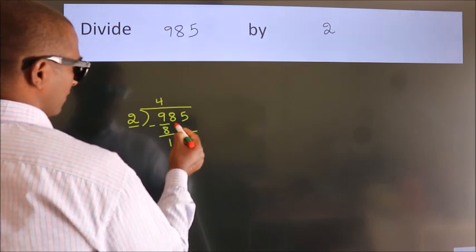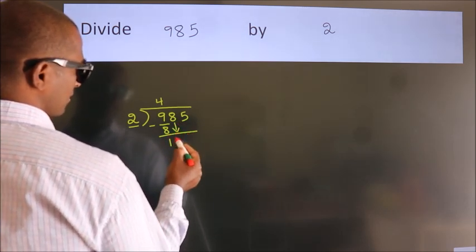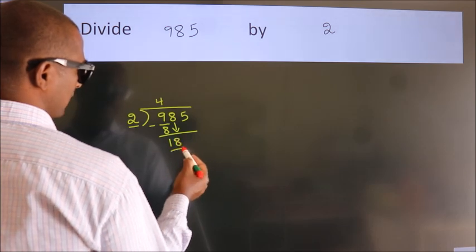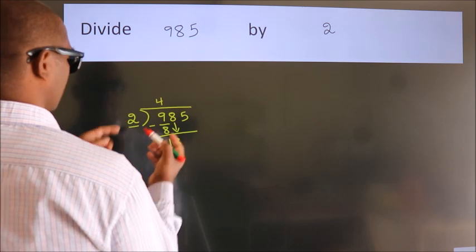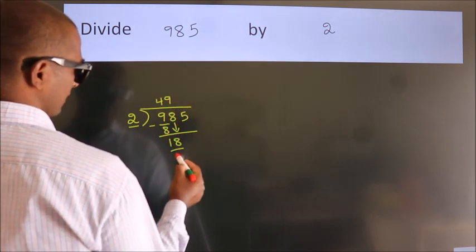After this, bring down the beside number. So 8 down. So 18. When do we get 18? In 2 table, 2 nines 18.